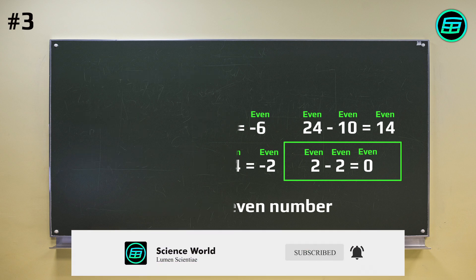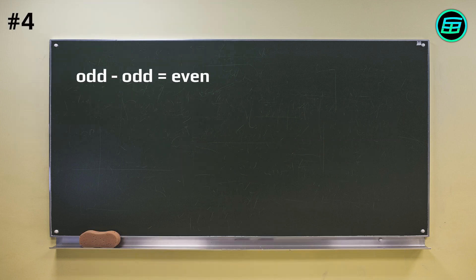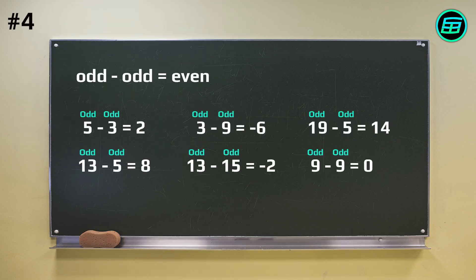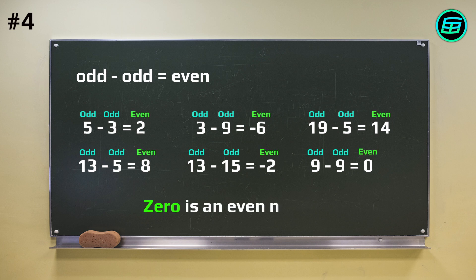Similarly, if we subtract two odd numbers, the result will be an even number. Once again, 0 is an even number.